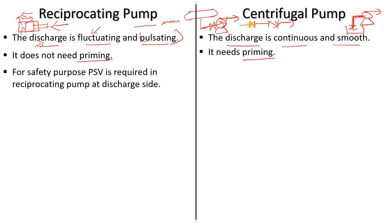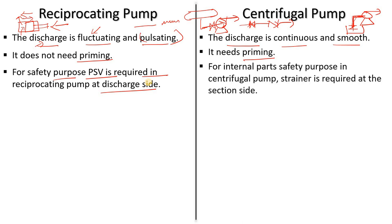For safety, a PSV (pressure safety valve) is required at the discharge side of a reciprocating pump. In a centrifugal pump, for internal part safety, a strainer is required at the suction side.